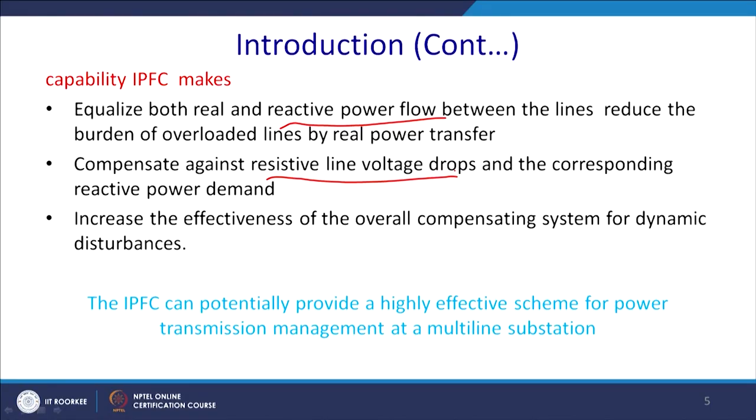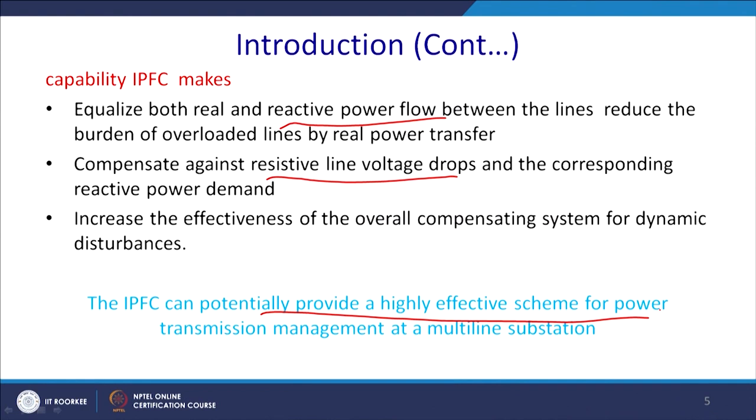IPFC compensates against resistive line voltage drop and corresponding reactive power demand without changing the X/R ratio. It also increases the effectiveness of the overall transmission system against dynamic disturbances because if there is a sag in a particular line, it can respond very fast compared to series or shunt compensation alone. Thus, IPFC can potentially provide a highly effective scheme for power transmission management of a multi-line substation.